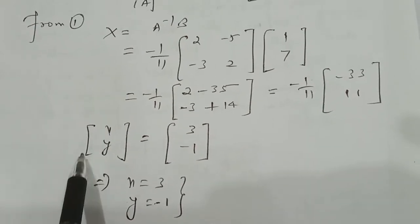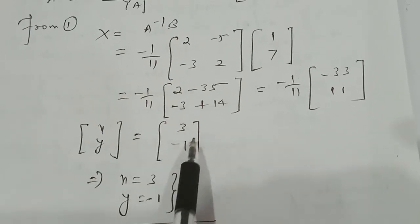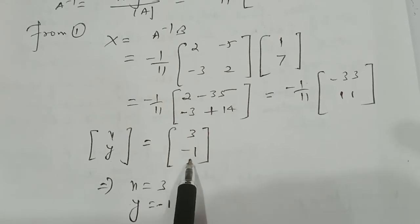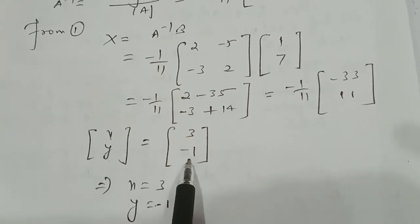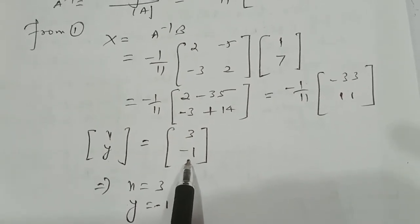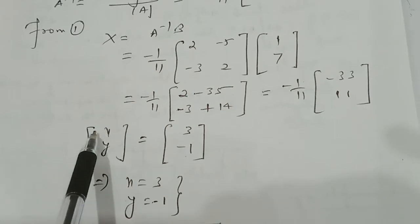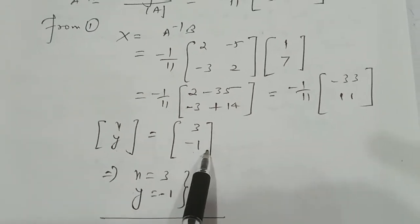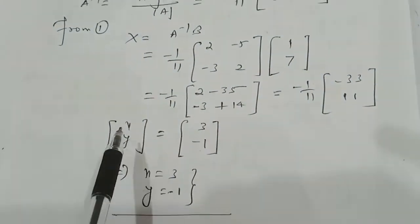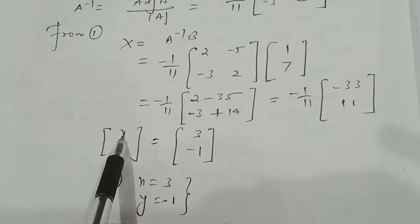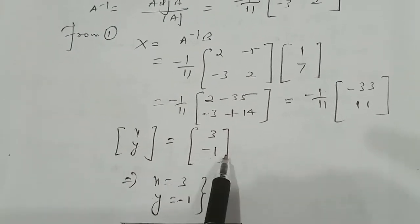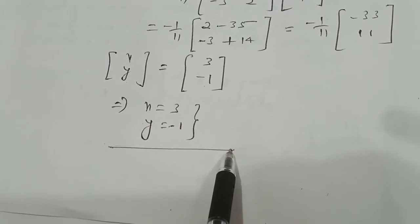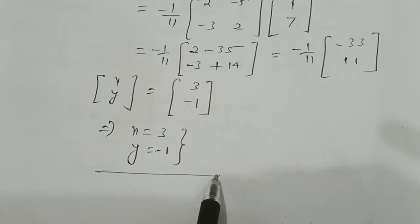Since two matrices of the same order are equal when their corresponding elements are equal, and both sides are matrices of order 2×1, we equate corresponding elements: x = 3 and y = −1. So this is the solution: x = 3 and y = −1.